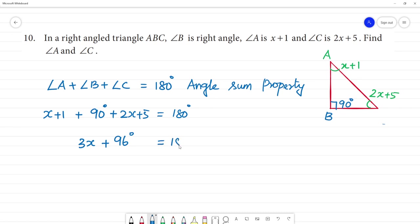96 degree equal to 180 degree. Combining the numbers, 1, 90, 95. 90 plus 5 is 95 plus 1, 96. For the x terms, 2x added gives 3x.